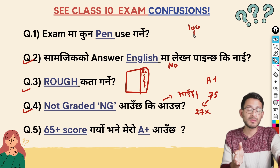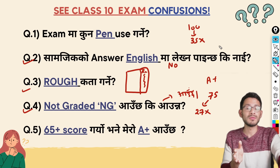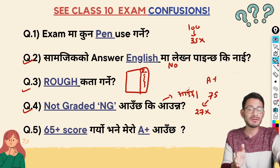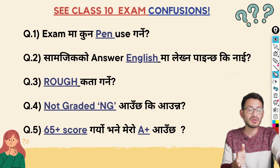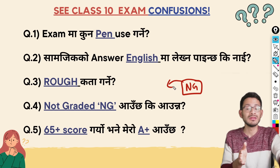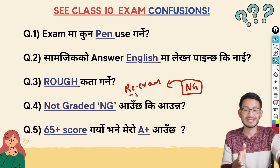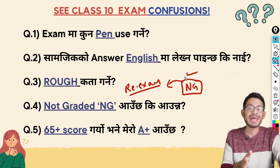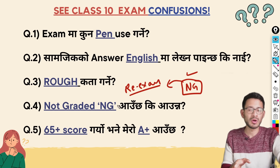Out of 100 marks, you need at least 35. When the grade system gives A+, A, and so on, if you fall below the minimum, your grade becomes NG — same as a fail. A re-exam will appear on your result. Without clearing this NG, you may not be able to join Class 11 or choose your stream.